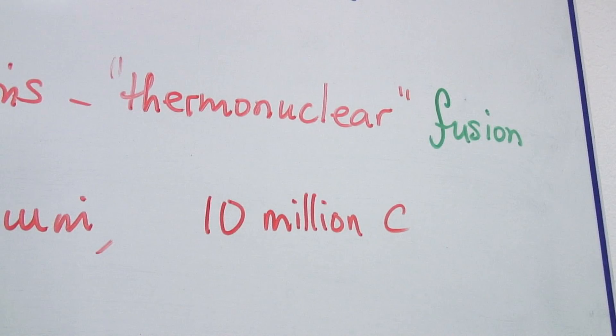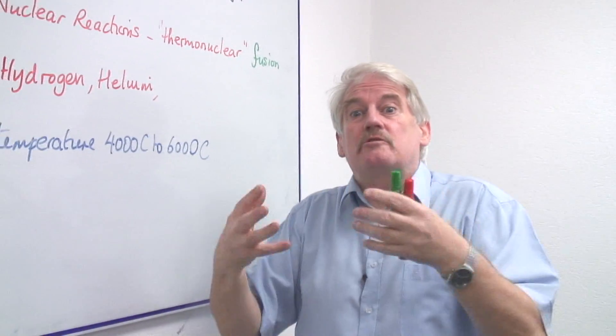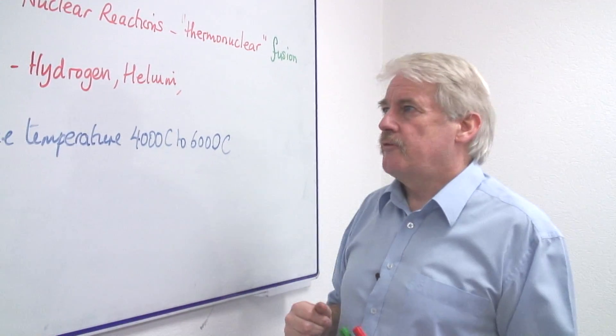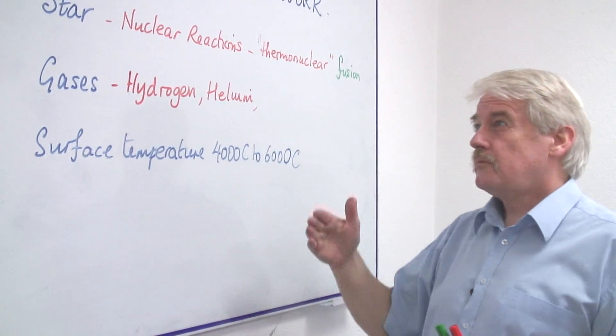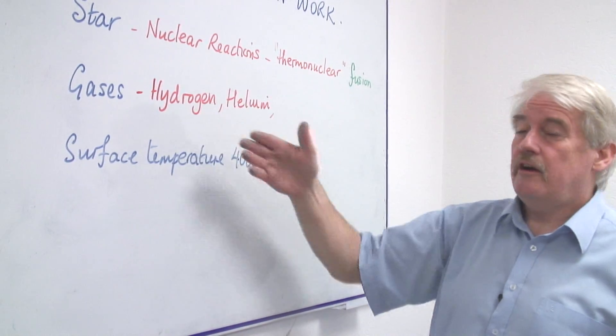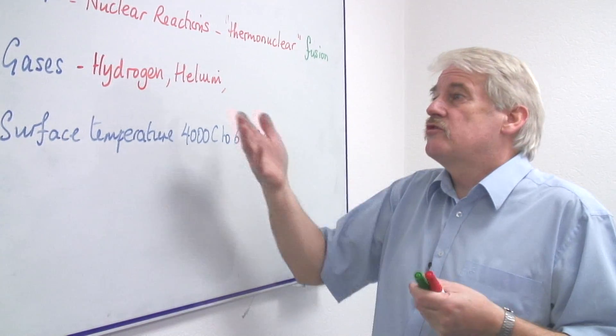The process of fusion, unlike fission, is about chemicals coming together to build bigger chemicals. For example, the smallest atom is hydrogen. Within the sun, hydrogen is reacting with other hydrogen to create helium.